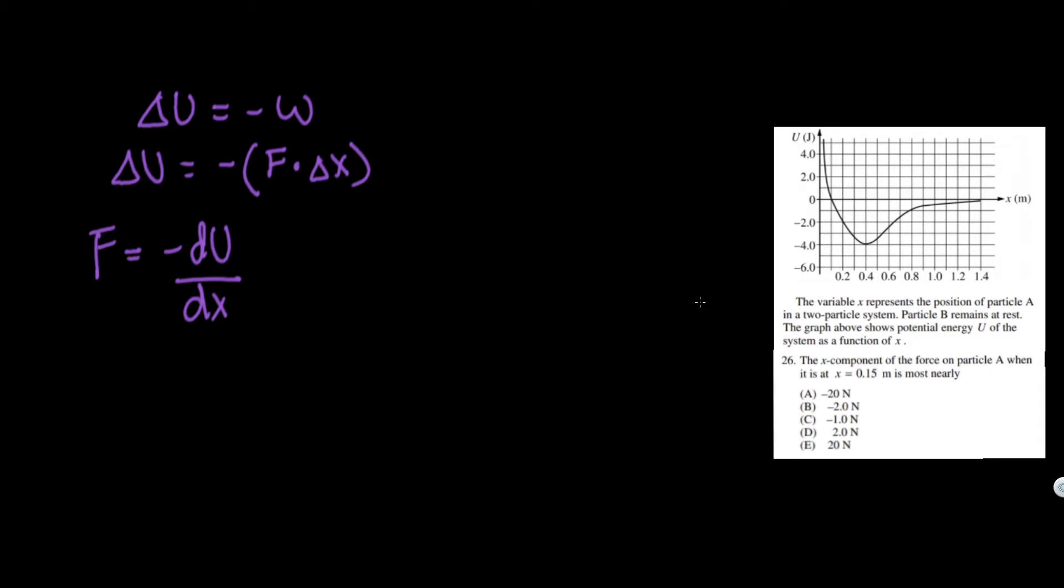Now all we've got to do is see the information they gave us. They said X equals 0.15 meter. If we look here, we can tell here it's 0.1 meter, so it's going to be in between and it will be most nearly right here. You can see they actually gave us a straight line for us to calculate the slope because we've got to remember it's the slope we're considering, or the negative in this case.